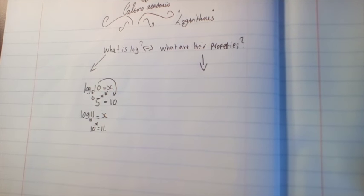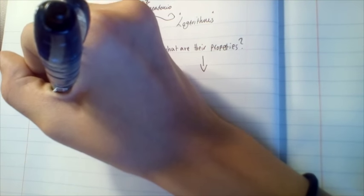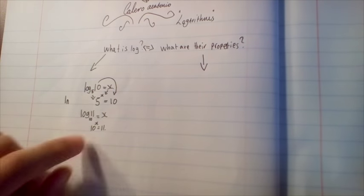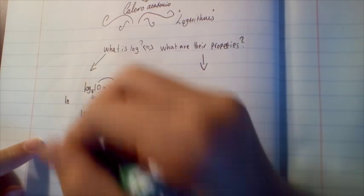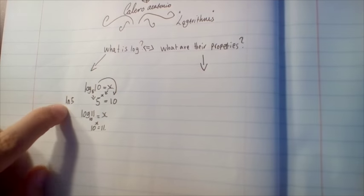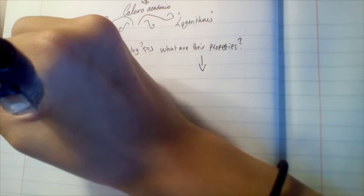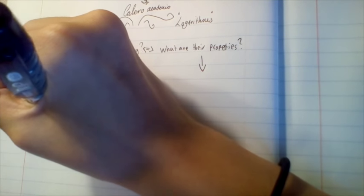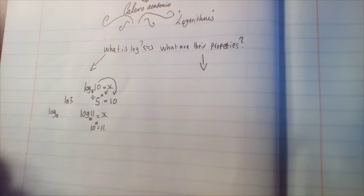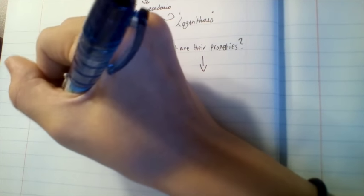Before we move on, we're going to identify another type of log, because it's called logarithmus naturalis, written as ln. For example, ln of 5 — logarithmus naturalis — means natural, to the base e. So logarithmus naturalis of 5 is log base e of 5, equals x, and e to the power of x is equal to 5.